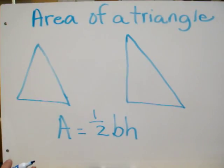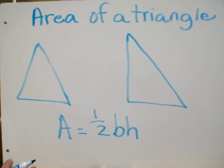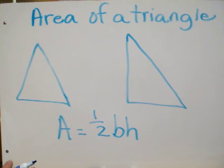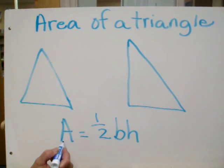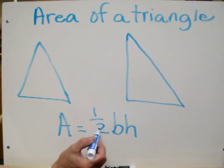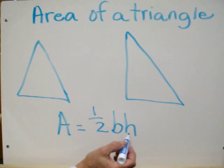Finding the area of a triangle is a state performance indicator all fifth graders should be able to know. There is a formula to find that area. A equals one-half base times height.